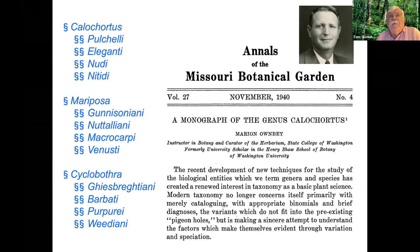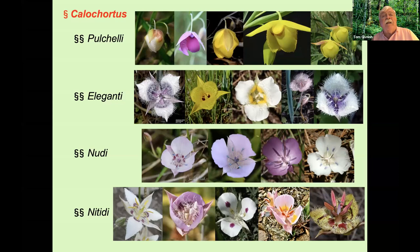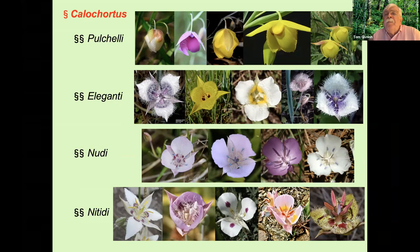Within section Calochortus, subsection Pulchelli—the beautiful ones—is marked by nodding fairy lantern flowers and nodding fruits, consisting of the California species Albus, Amoenus, Raichii, Amabilis, and Pulchellus. Subsection Eleganti is marked by cat's ear flowers and nodding fruits, including Tolmiei, Monophyllus, Apiculatus, Caeruleus, and Elegans. There was some background audio noise here, so please stay muted. Subsection Nudii includes species with nodding fruits and star tulip flowers with glabrous petals, including Umbellatus, Uniflorus, Minimus, and Nudus, among many others.